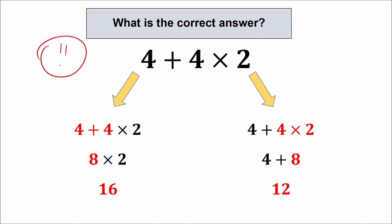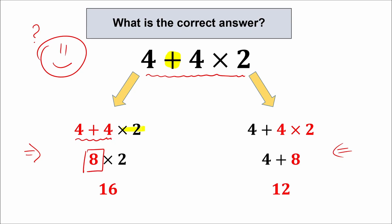Looking at this very basic question, a lot of students might ask what the correct answer is. We have two branches. What makes all the difference is the order we do this problem. The first group of people might say, let's start with addition: 4 plus 4 equals 8, then multiply by 2 to get 16. So 16 is the answer according to the first branch.